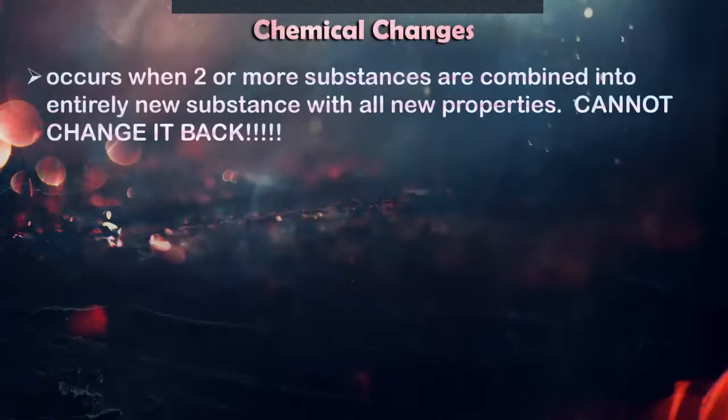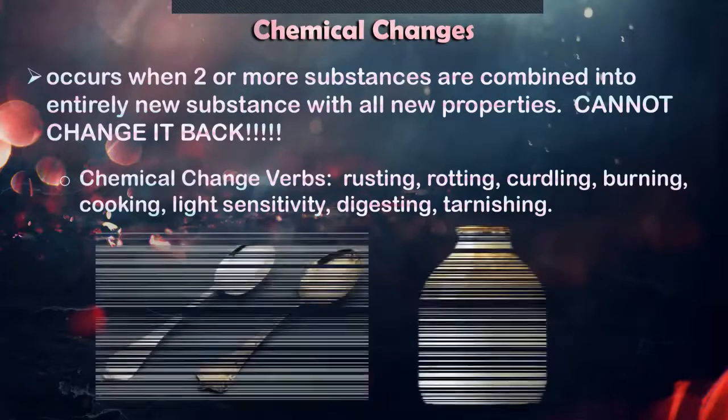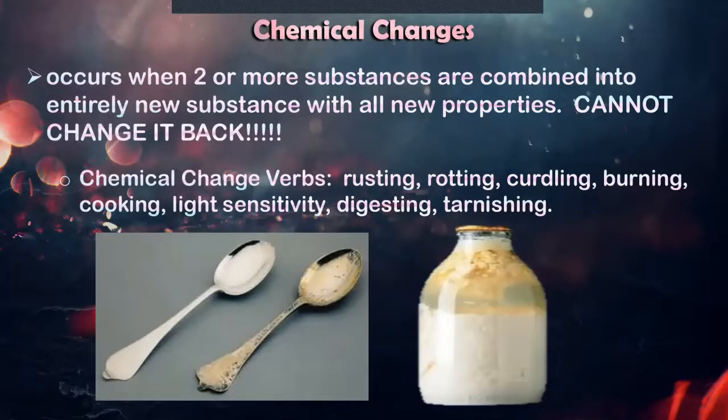Chemical changes: it occurs when two or more substances are combined into an entirely new substance with all new properties. Cannot change it back. The damage has been done. And these are the chemical change words: rusting, rotting, curdling, burning, cooking, light sensitivity, digesting, and tarnishing. So here's an example. Another clue for us to identify that the example is under chemical change is there is a change in smell and color.